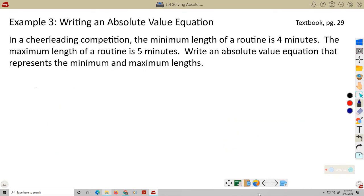Let's take a look at our last example, writing an absolute value equation. Absolute value equations, to me personally, they're not very intuitive. I kind of have to think a lot about what goes where. But, I think the easiest thing to do here is just kind of memorize what the form looks like and what goes where. In a cheerleading competition, the minimum length of a routine is 4 minutes. The maximum length of a routine is 5 minutes. Write an absolute value equation that represents the minimum and maximum length. So, the first thing we need to do here is find the midway point between the minimum and maximum.